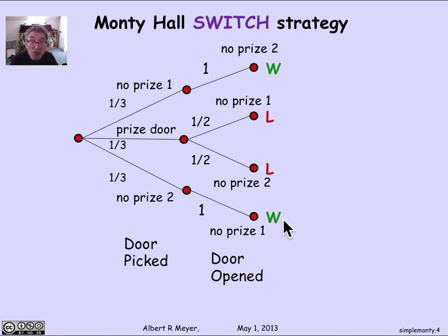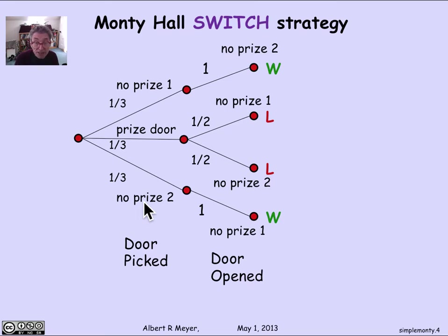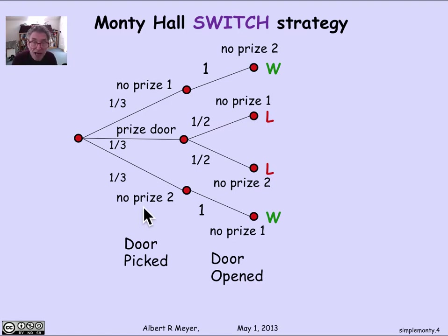We've captured the whole story by simply relativizing the first move — instead of it being literally door one, door two, door three, all we care about is whether the contestant picks the prize door, the first no-prize door, or the second no-prize door. This would have been a much better tree to start with for analyzing the probability of winning. We'll get some mileage out of the more complicated tree later when we discuss conditional probabilities at various stages of the experiment.